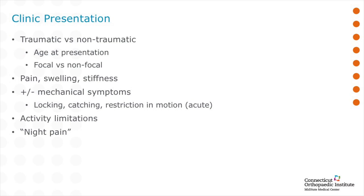Patients will frequently ask, how did this occur? There are many ways this can occur — either traumatic with an injury, or really you can't identify a source. That depends upon the age of presentation. Younger athletes usually have an injury; more senior athletes, less of an injury. Usually the pain is either localized at one spot on the knee, or just hurts all over.